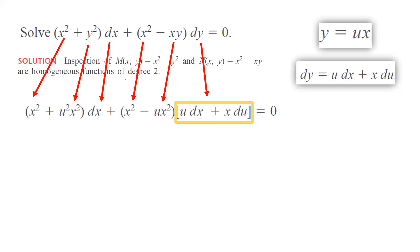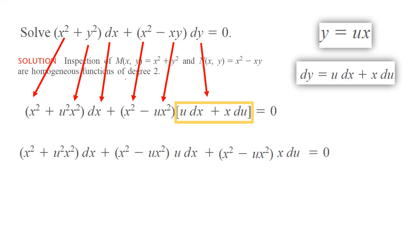On the right hand side it is just 0. Now we're going to do a little bit of algebra. We're going to distribute x squared minus ux squared into the bracket. This becomes x squared plus u squared x squared dx, plus x squared minus ux squared times ux dx, plus x squared minus ux squared times x du.